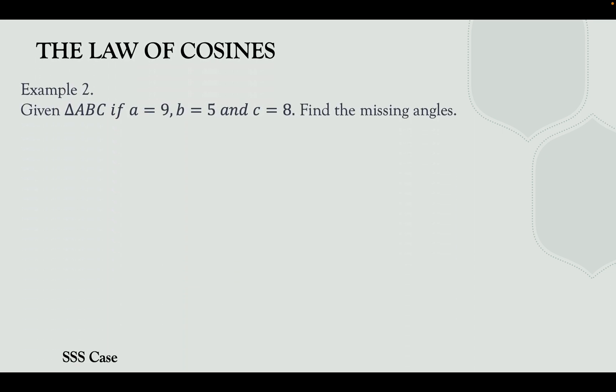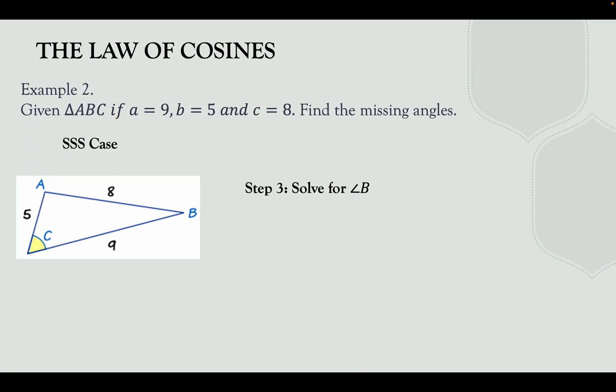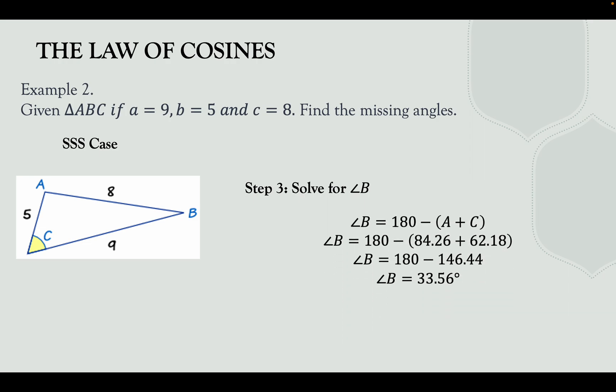Step three: find the third angle. Angle B = 180° − (angle A + angle C) = 180° − (84.26° + 62.18°) = 180° − 146.44° = 33.56°.